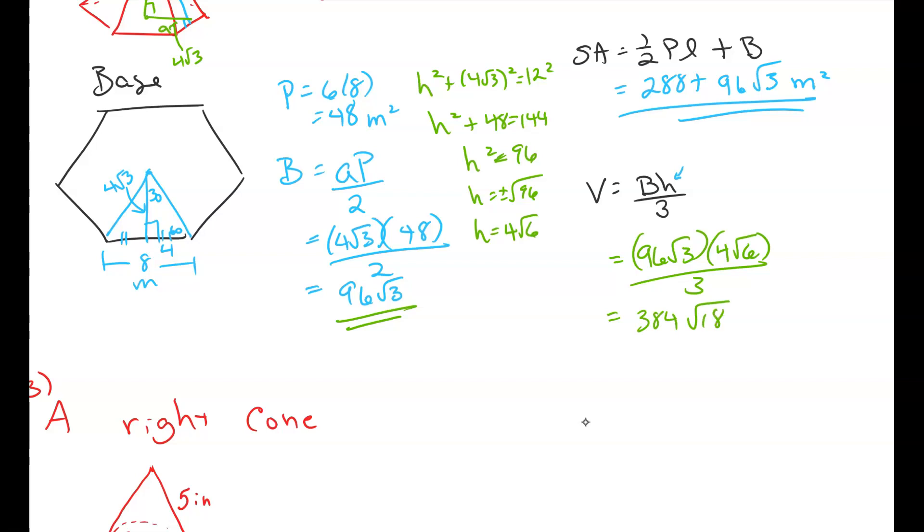And that simplifies if we multiply the coefficients out in front of the radicals and the radicals together. 384 root 18 all over 3. And yes, I want this in simplest form. So I'm going to keep this easy in you guys. What's the square root of 18 simplify down to? That's right, 3 root 2. Notice the 3s go away. So my volume is 384 root 2 and that's it cubic meters.